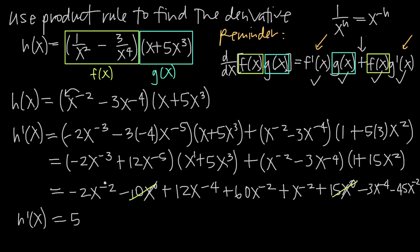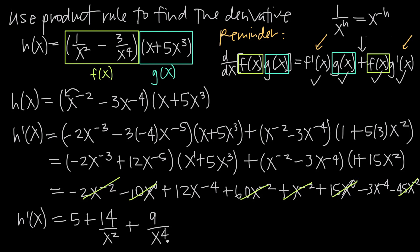For the x to the negative 2 terms: negative 2 plus 60 plus 1 minus 45 gives positive 14, so we get plus 14x to the negative 2, which equals 14 over x squared. For the x to the negative 4 terms: positive 12 minus 3 gives positive 9, so plus 9x to the negative 4, which equals 9 over x to the 4th. Therefore, the derivative h'(x) equals 5 plus 14 over x squared plus 9 over x to the 4th.